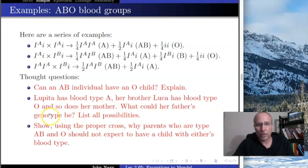Third question. Using a proper cross, using the crosses with the alleles, with the I's, explain or show why parents who are type AB and O should not expect to have a child with either blood type AB or O.